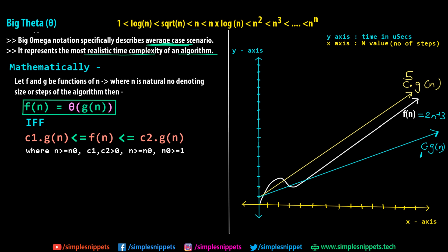Mathematically, g(n) = Θ(f(n)) if and only if there exist two constants c1 and c2 such that: c1·g(n) ≤ f(n) ≤ c2·g(n), for n > n₀, c1, c2 > 0, n₀ ≥ 1. We are bounding both the upper and lower limit, with our original function in between. For f(n) = 2n + 3 and g(n) = n, c1 would be the lower limit and c2 the upper limit.